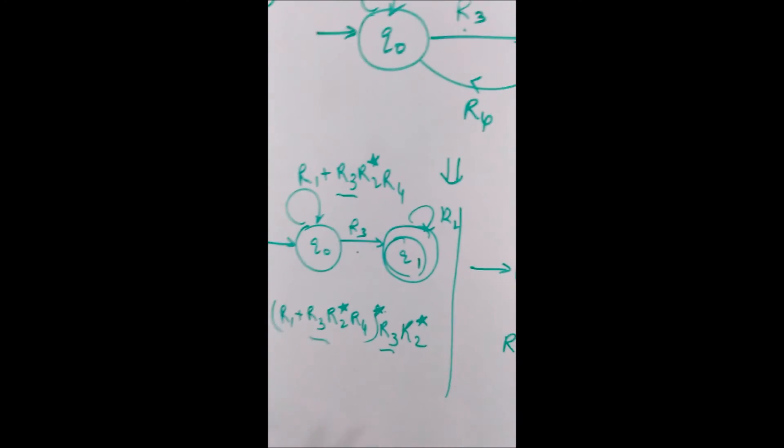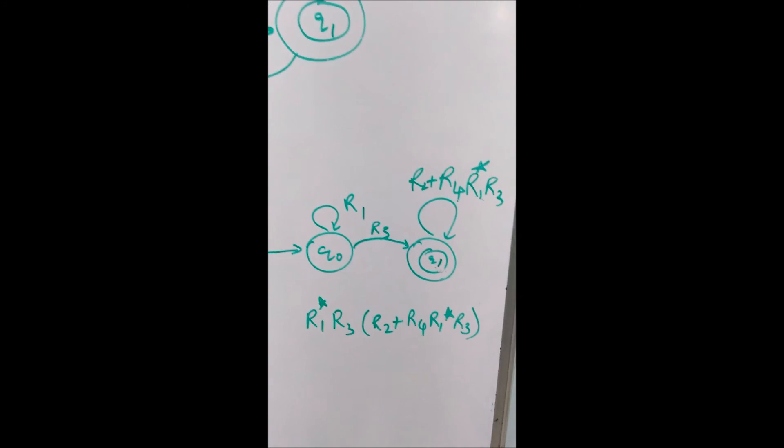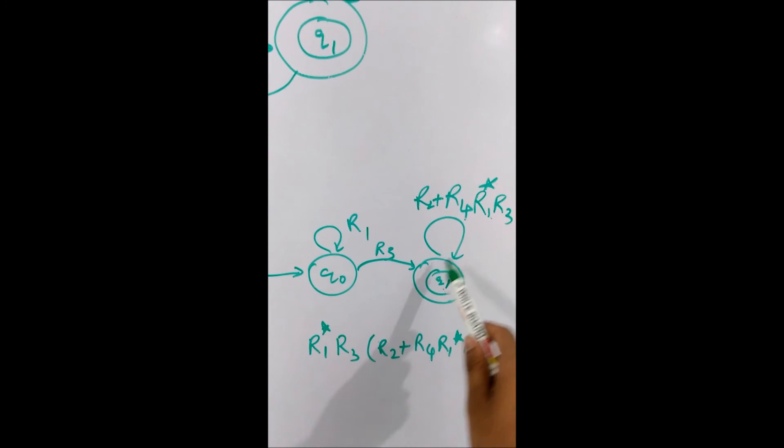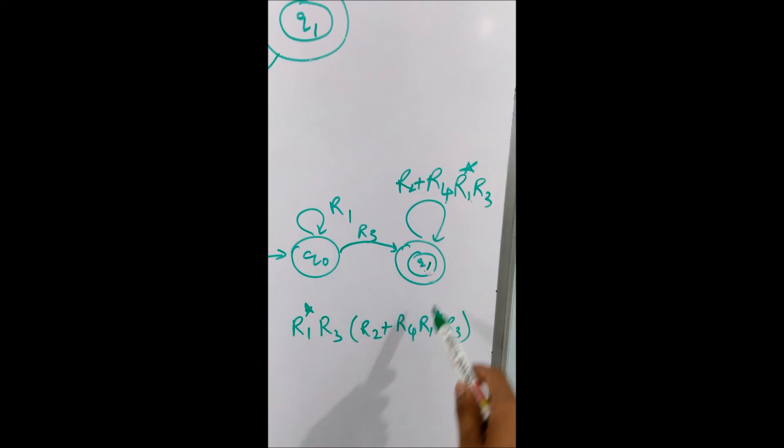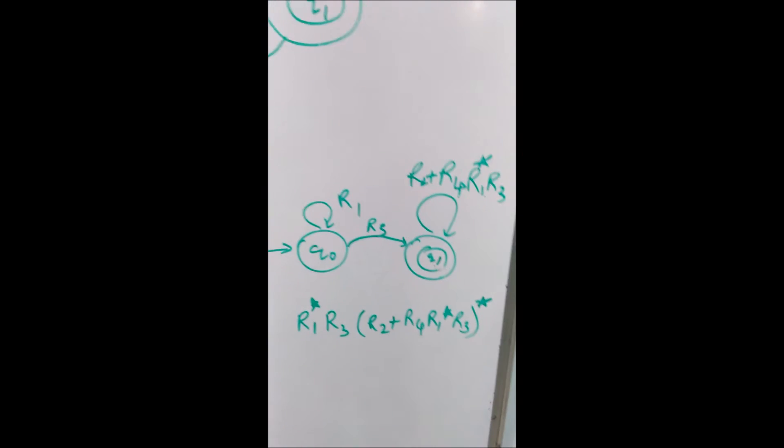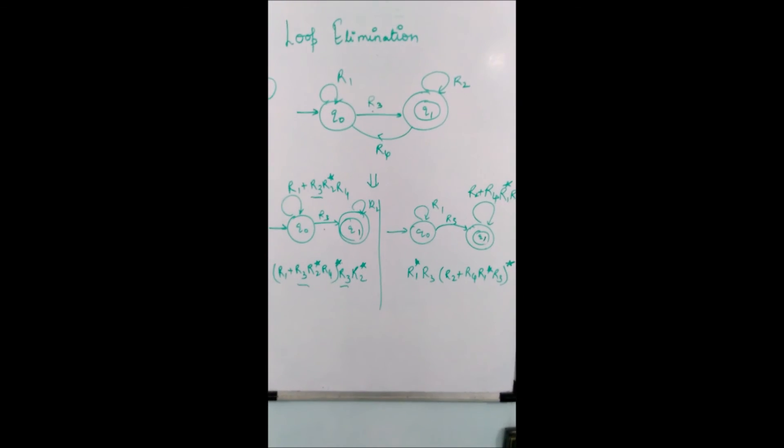If you transfer the effect to the right state then it will be something like this: r1 star which is for this, then r3, and then this loop is self loop. Here it should be star. r2 plus r4, r1 star, r3 and whole star. In this way you can convert the DFA to regular expression.